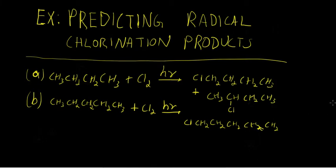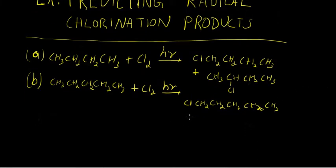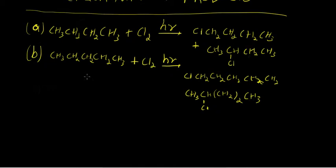So the first product comes from chlorination at the terminal carbon. The second product comes from chlorination at C2 or C4. And the third possible product comes from chlorination at C3, the central secondary carbon.